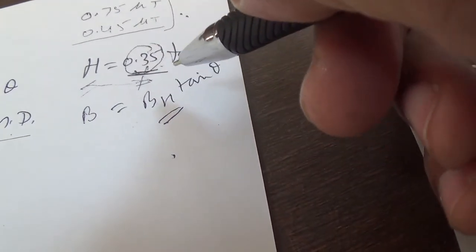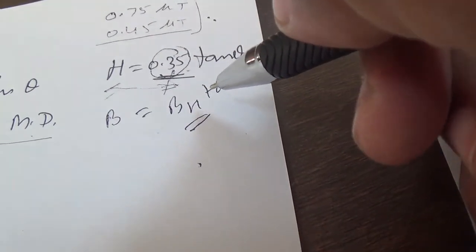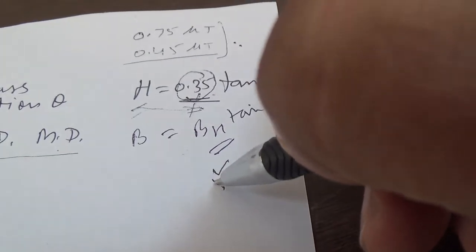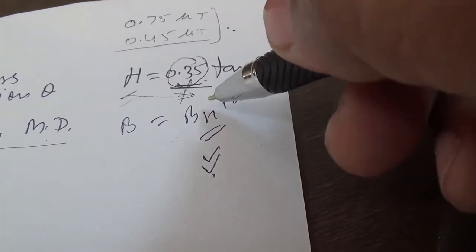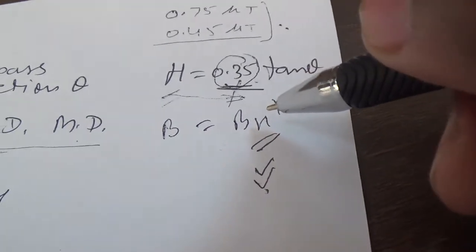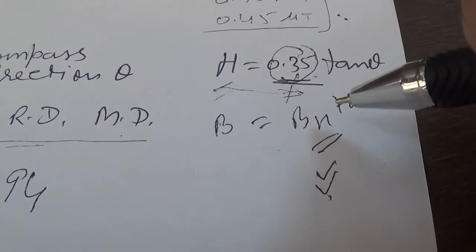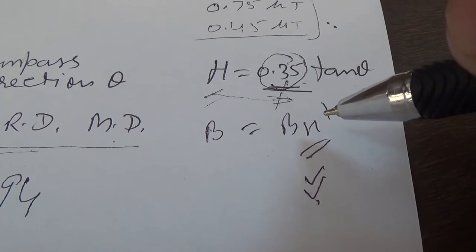Now the question is, the main question and main point from my side is to determine the value of this BH. How to find out the value of BH, the horizontal component of the Earth at the place where we are performing the experiment?